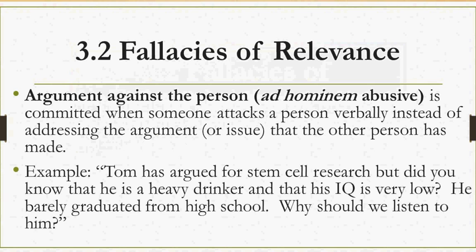Here's an example: 'Tom has argued for stem cell research, but did you know that he is a heavy drinker and his IQ is very low? He barely graduated from high school. Why should we listen to him?' The person committing the fallacy has focused on Tom's low IQ, his drinking, and the fact that he barely graduated from high school as a way to attack him, instead of addressing the argument Tom gave for stem cell research. These things may very well be true about Tom, but they are logically irrelevant to the argument he has made. If the person had not committed a fallacy, they would have looked at the argument Tom gave — that would have been relevant. Even if these things are true about Tom, it is possible he gave a very good argument for stem cell research, so the person would have to examine those reasons rather than attacking Tom.